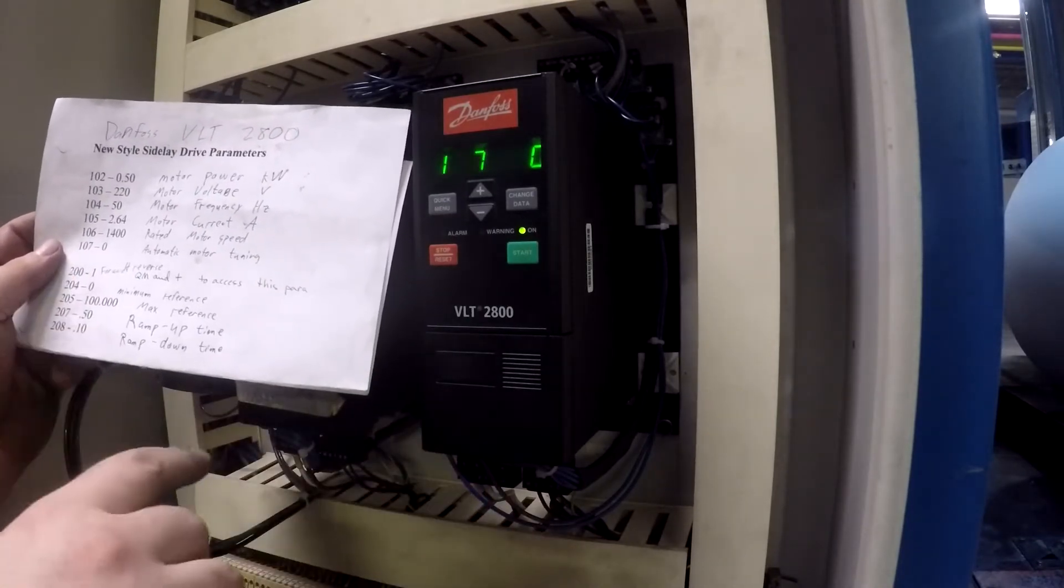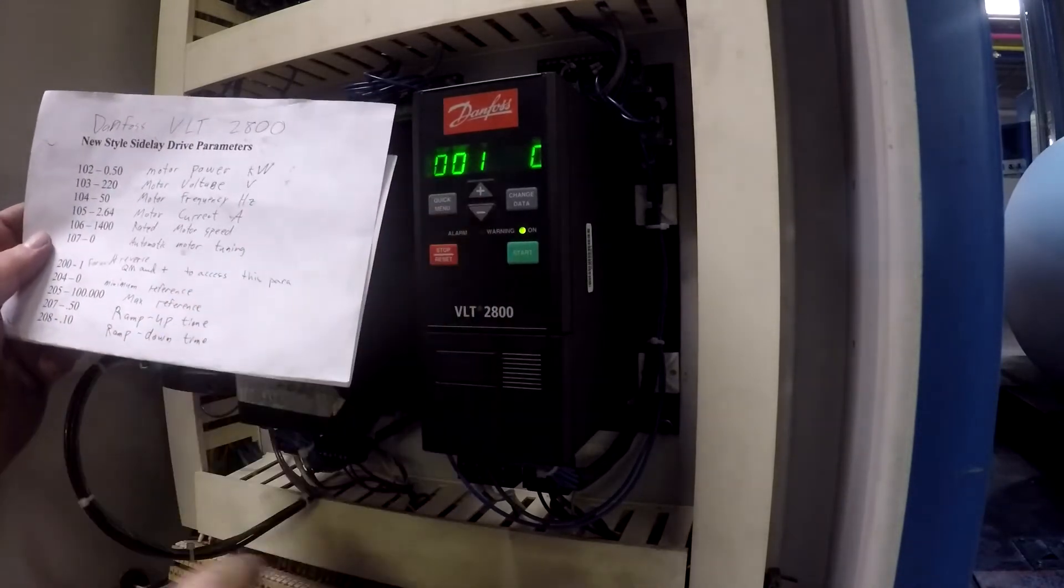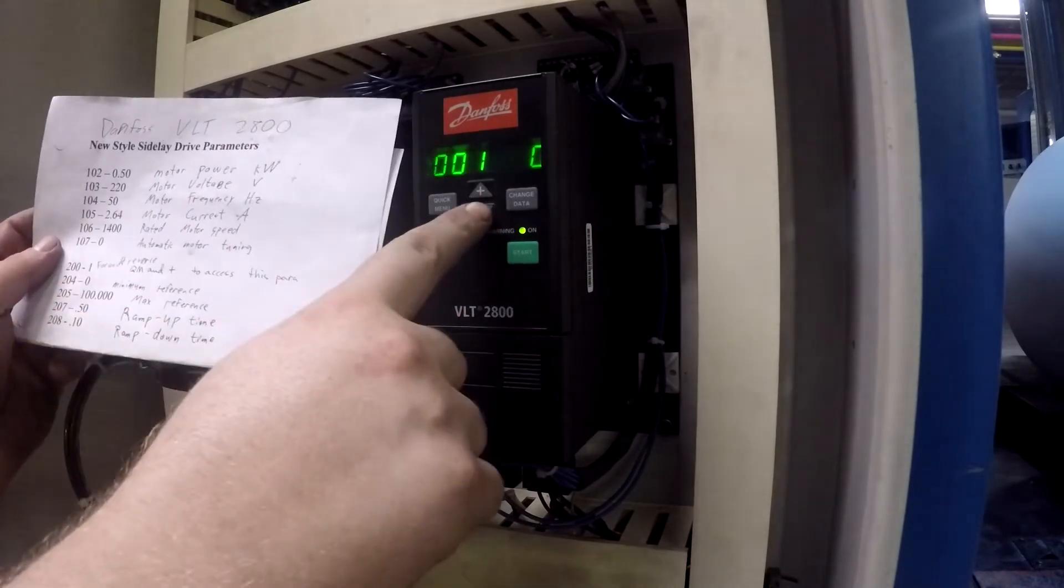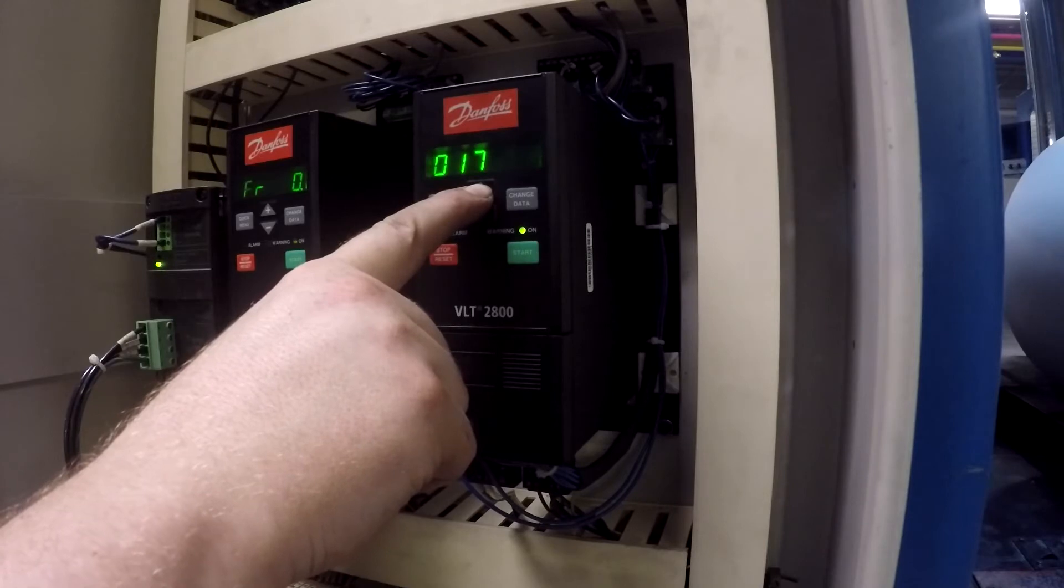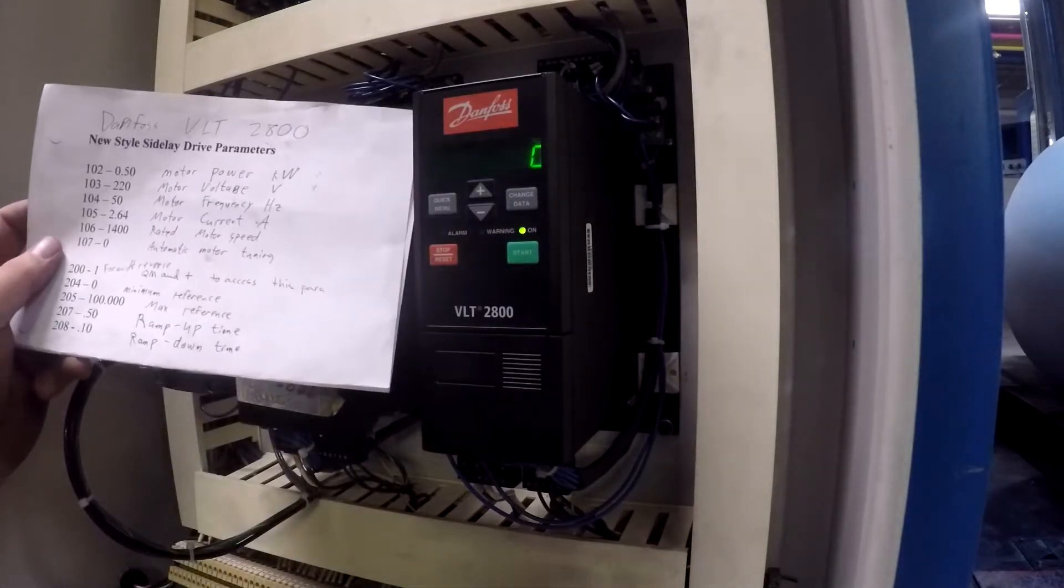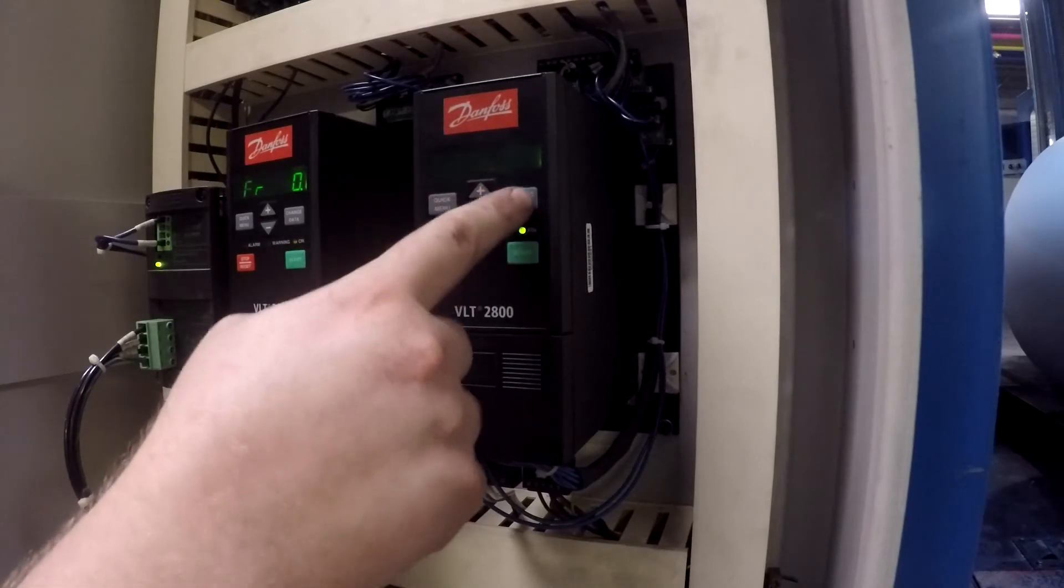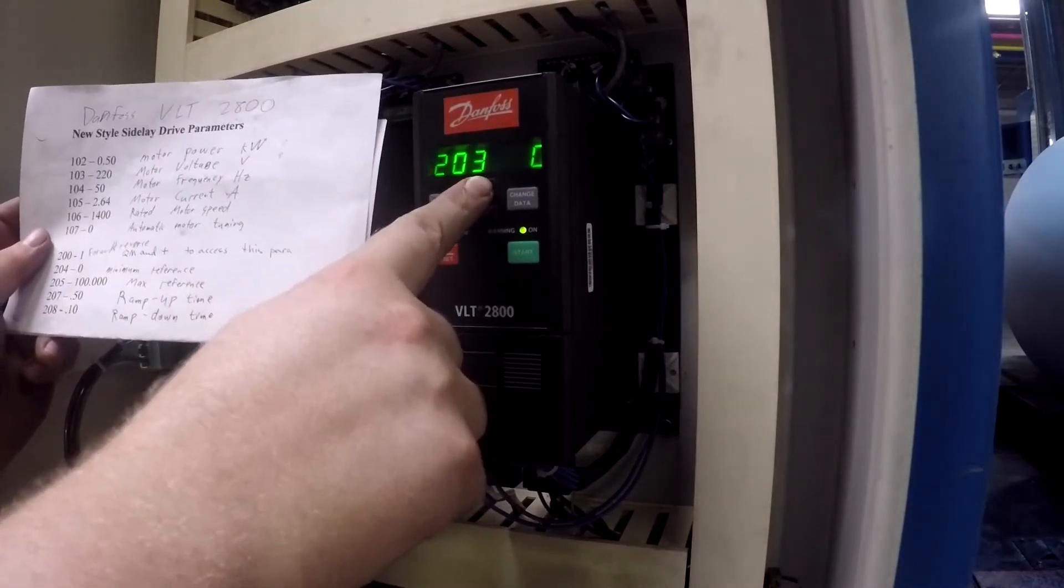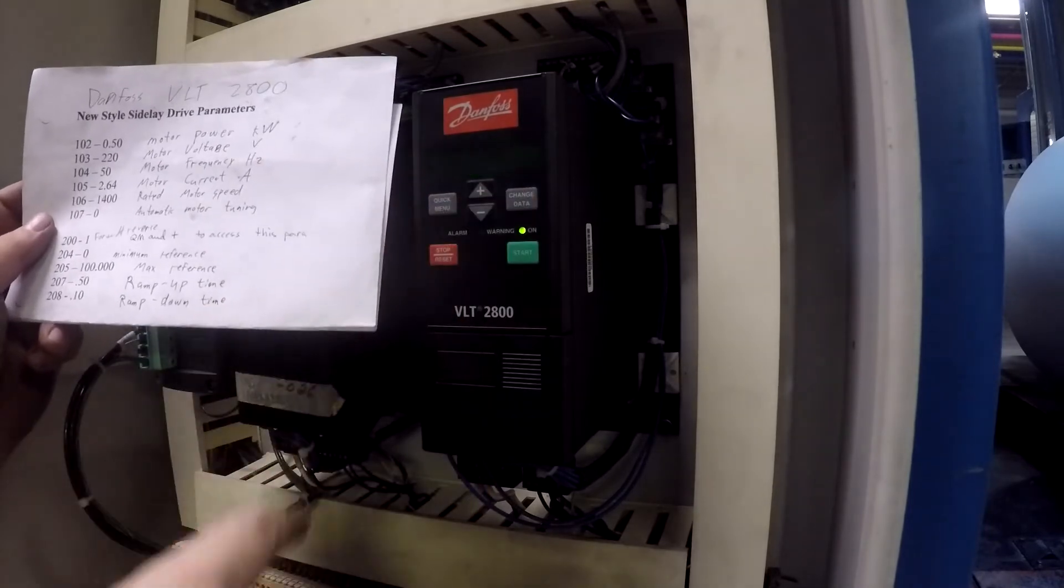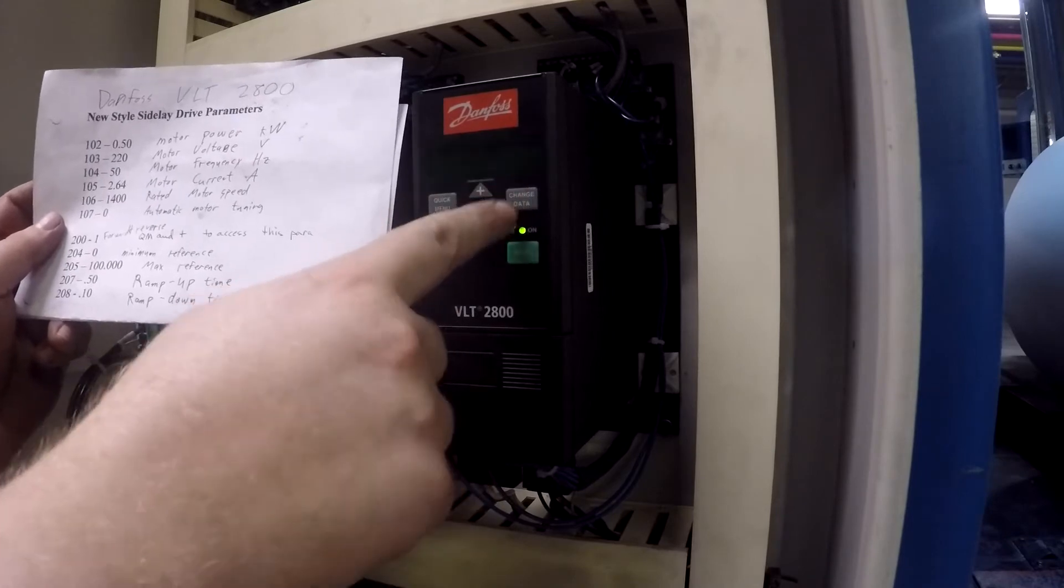Now we have to get to the extra parameters, so we need to get to 200. To do that we go quick menu and plus. So now we're going to look for 200. 200 should be one, so that's going to make it so that this can travel forward and reverse. 204 should be zero, that's the minimum reference. 205 should be 100.